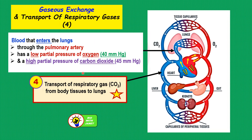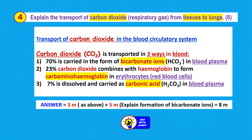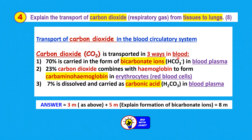The last part of our video focuses on the transport of the respiratory gas carbon dioxide from body tissues to lungs. How is carbon dioxide transported from body tissues to the lungs for excretion, and in what form? Carbon dioxide is transported in three ways in blood. 70% is carried as bicarbonate ions, HCO₃⁻, in the blood plasma. 23% combines with hemoglobin to form carbaminohemoglobin in erythrocytes. And 7% dissolves in water to form carbonic acid, H₂CO₃, in the blood plasma.